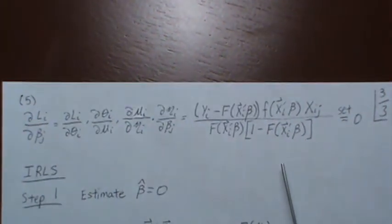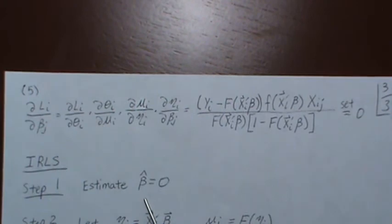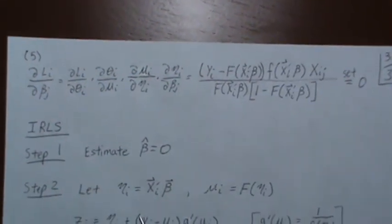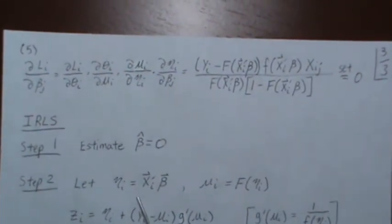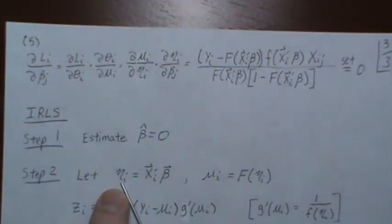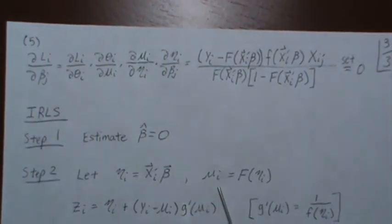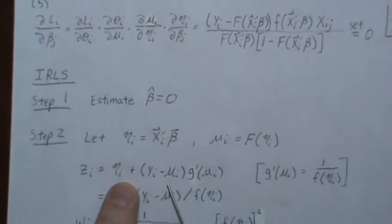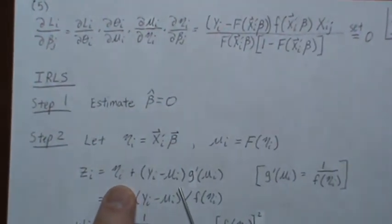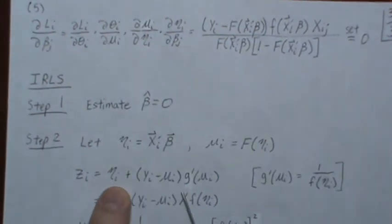In step one, we set beta to zero. Then in step two, we let eta be this linear combination. But since those are all zeros, that's zero. And then to find the mean, we take F of eta. But that's a CDF evaluated at its center point, so that's 0.5. And then we plug it into these. On BV4 or 5, the general link function, this was the formula.